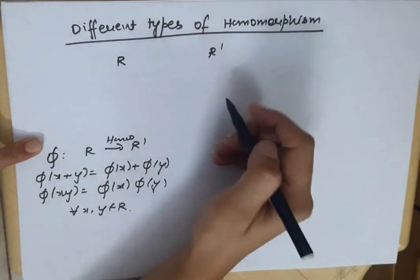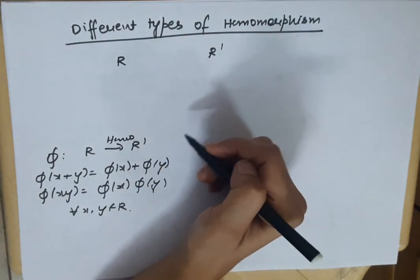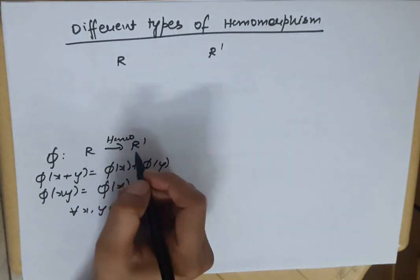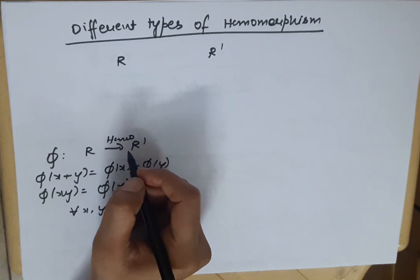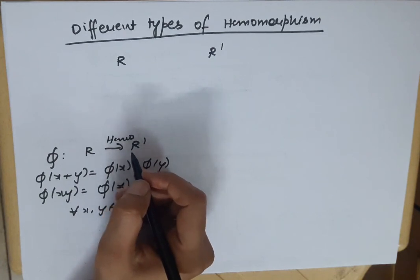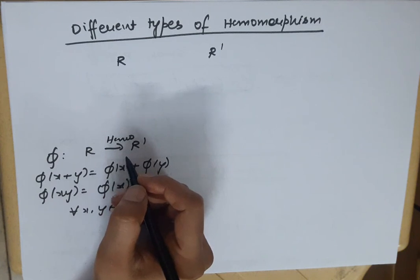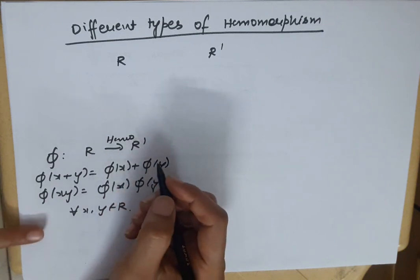So, if we add a condition to this homomorphism mapping, then what terms do we get? We are discussing all these terms here.